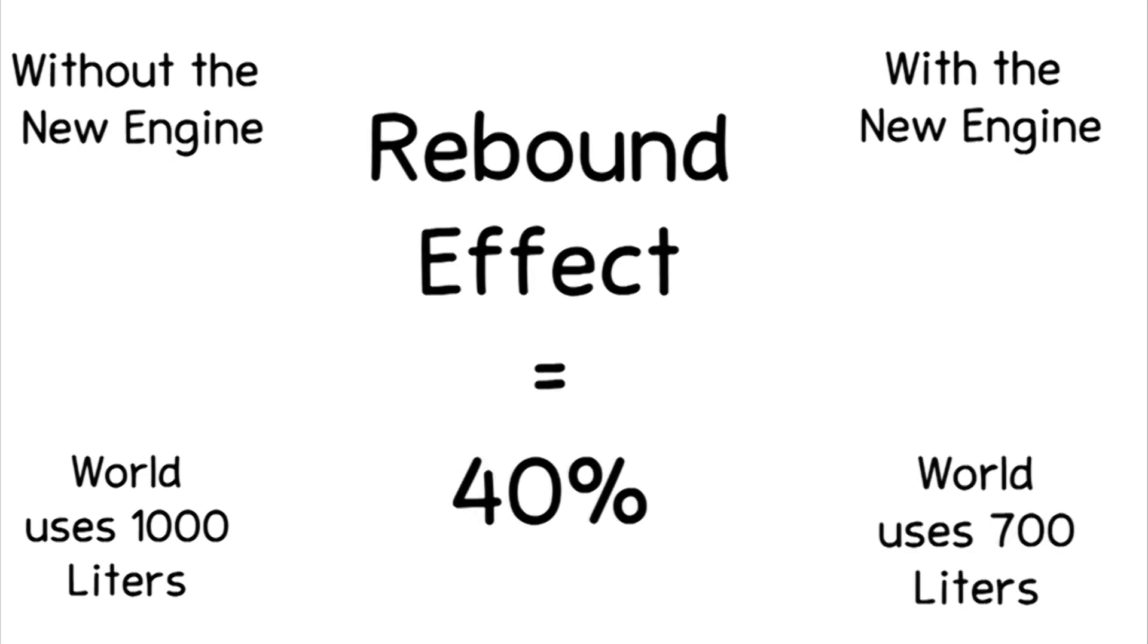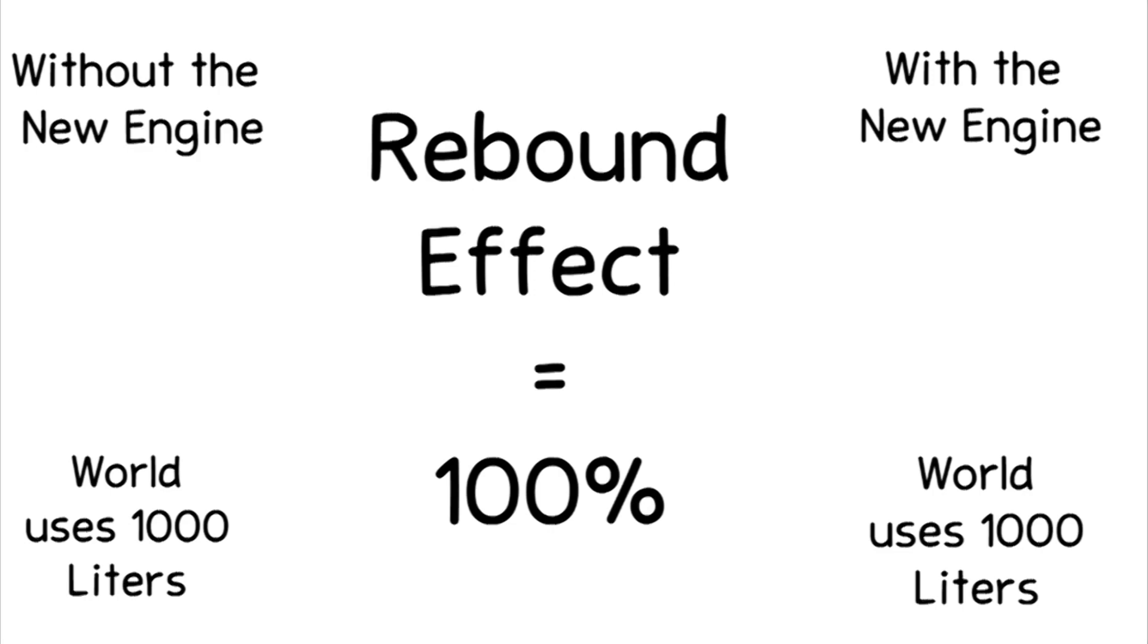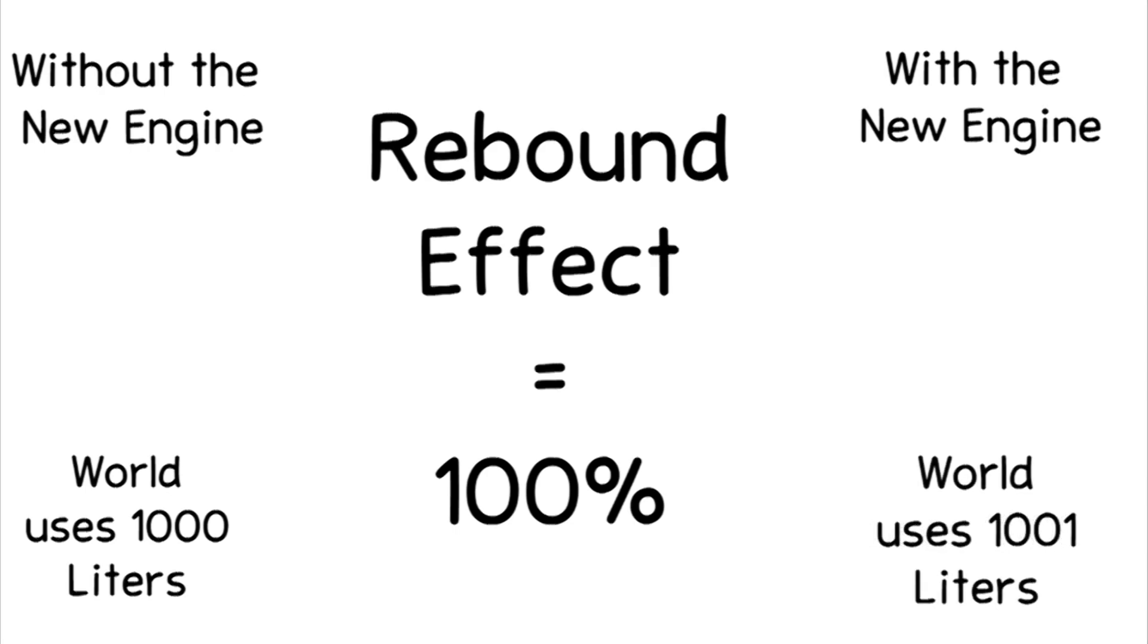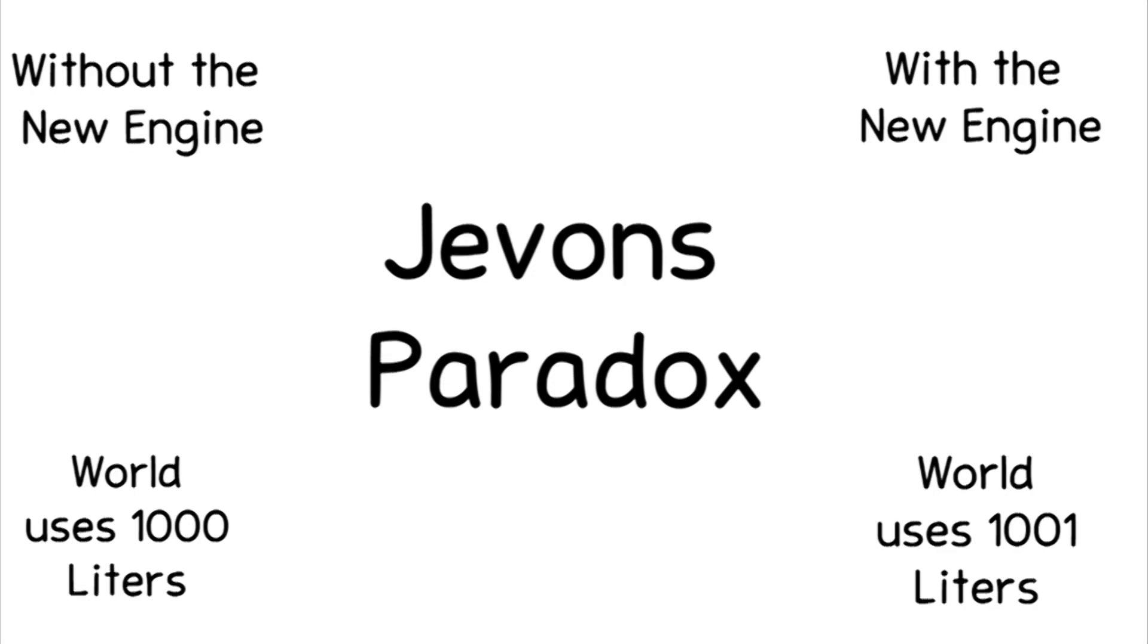What if it was 700? This means that the rebound effect is 40%, 800, 60%, 900, 80%. And if it is the same amount that people used to consume, a thousand liters with the new engine and a thousand liters with the old engine, this means that the rebound effect is 100%. After this point, something called Jevons Paradox happens.